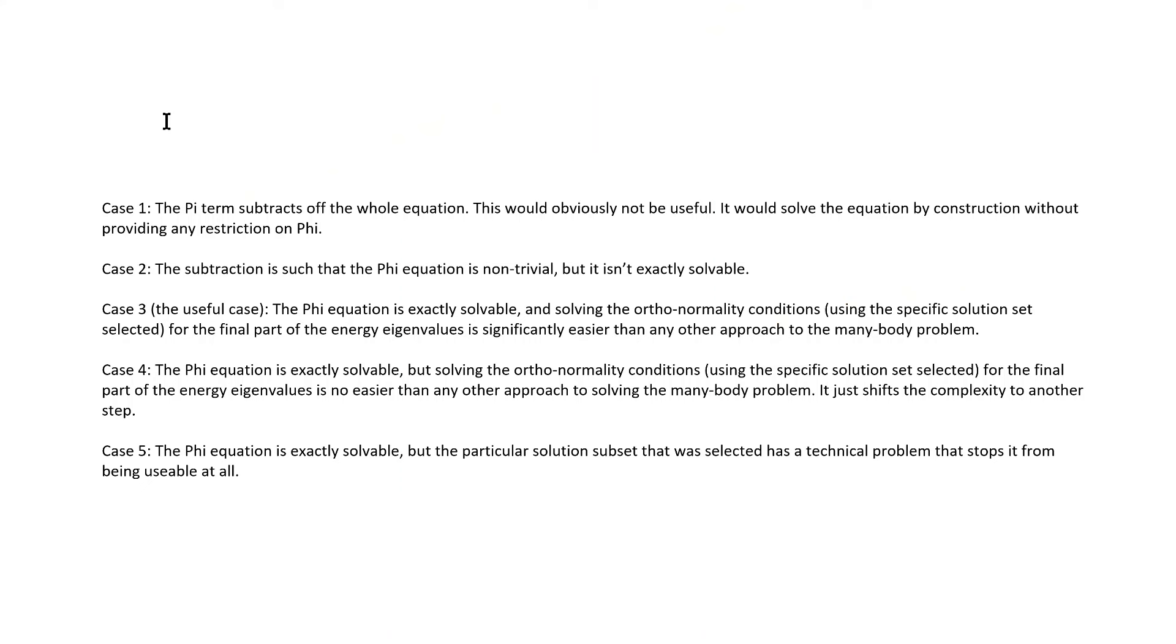The phi equation that comes from any particular subtraction that I might choose to apply falls into one of five categories. The first possibility is the one that I mentioned earlier, and that is that the phi term subtracts off the whole equation. This would obviously not be useful. It would solve the equation by construction without providing any restriction on phi at all. When I mentioned it earlier, I think I said whole Hamiltonian instead of whole equation. When I said that, I was thinking of case one, so I meant whole equation. Although I can't imagine that subtracting off the whole Hamiltonian would be massively more useful.